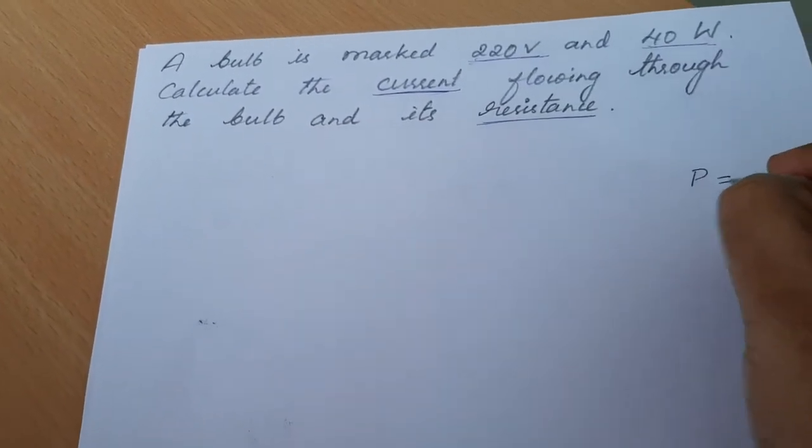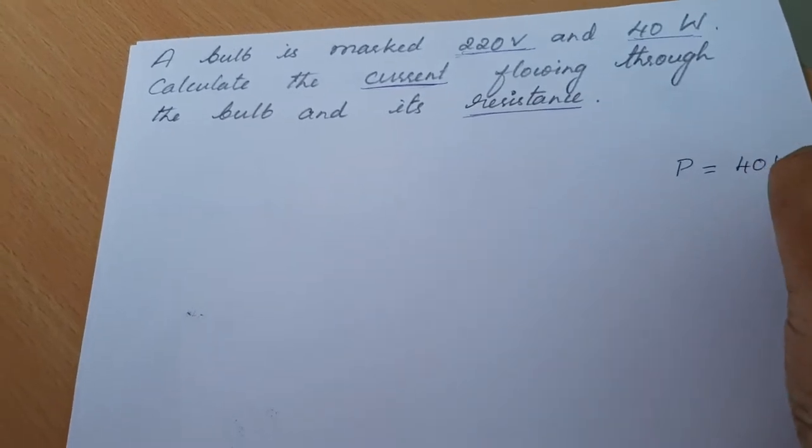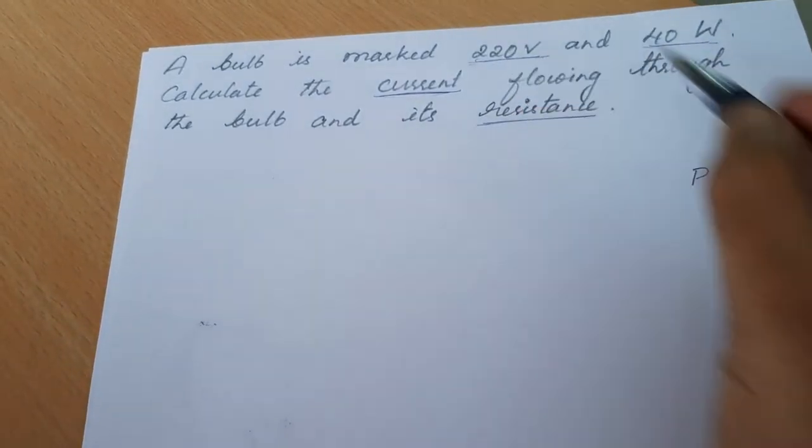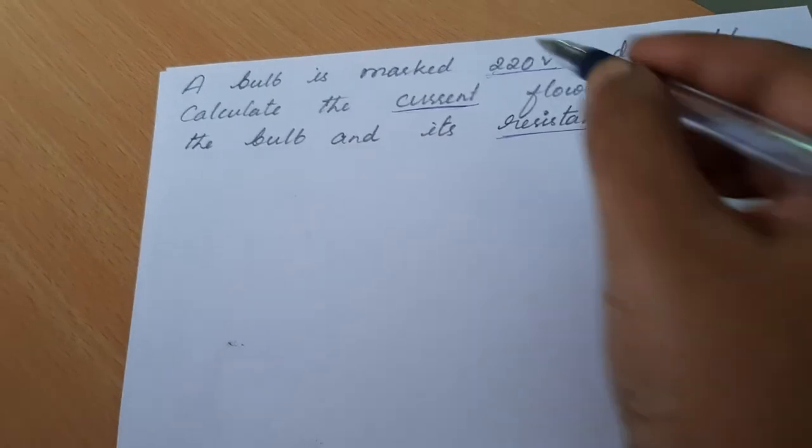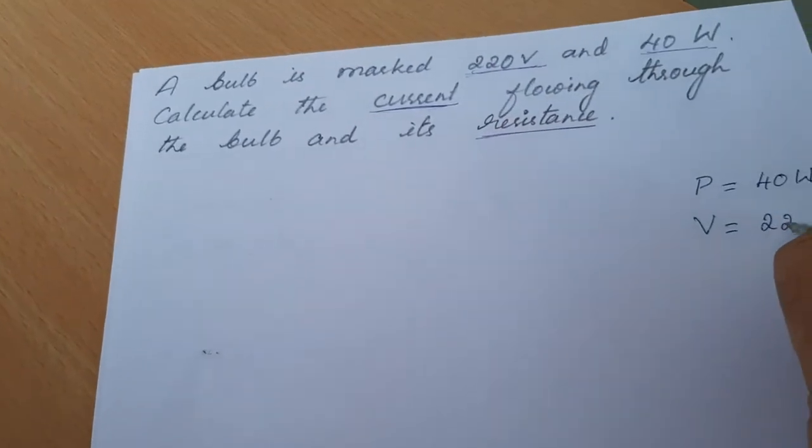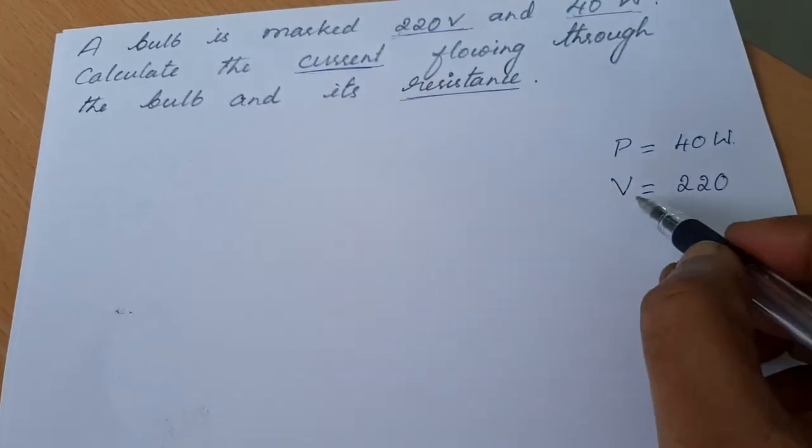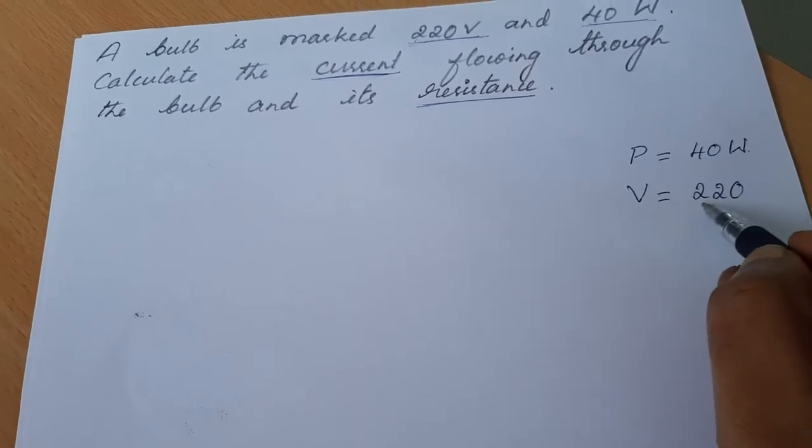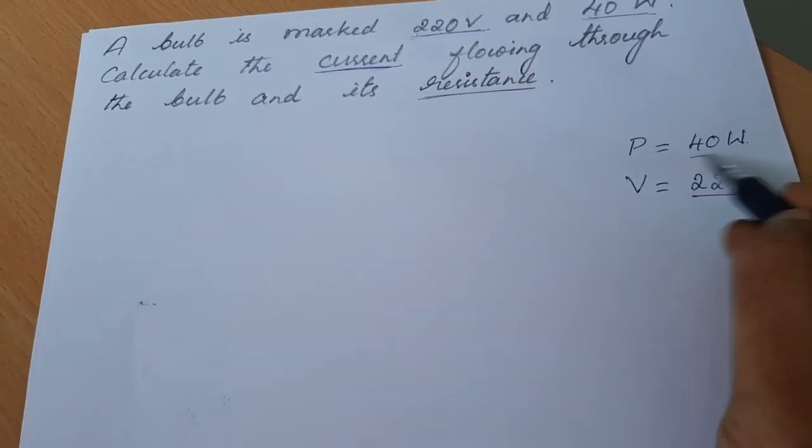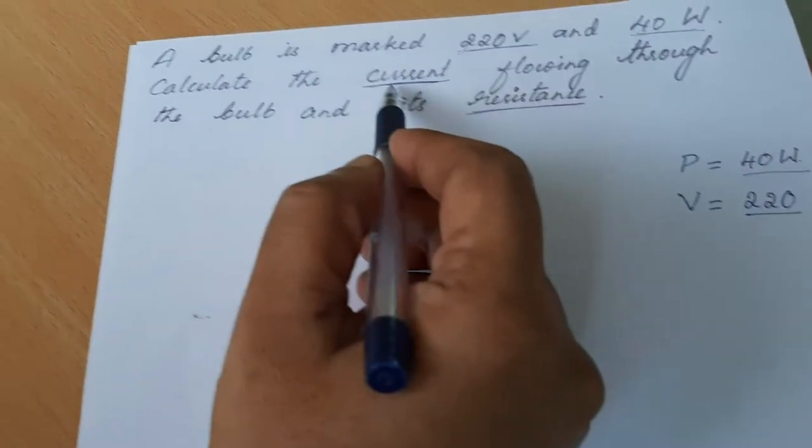Let us write down: P is given as 40 watt and potential difference V is given as 220 volts. So the potential difference is 220, power is 40 watt. We need to calculate current.